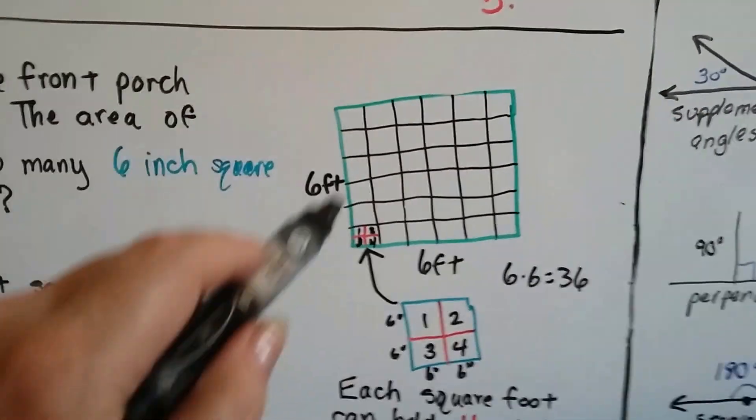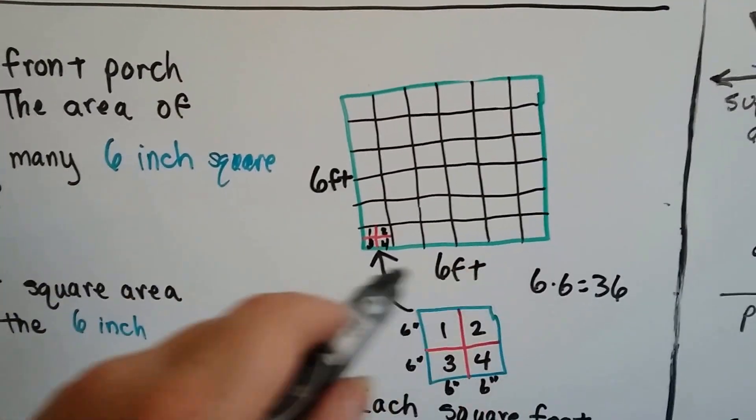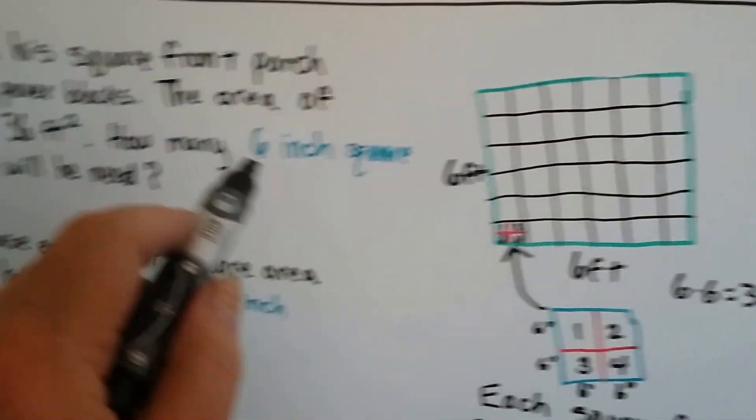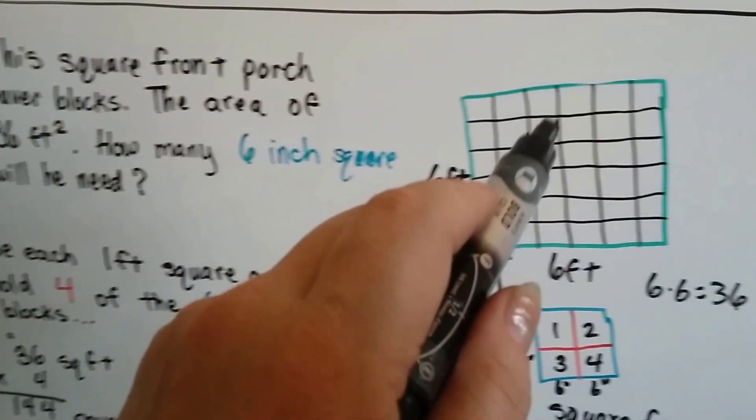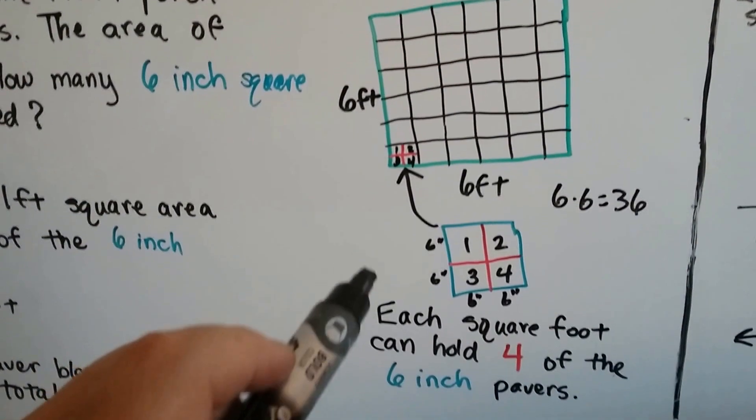So here's his front porch. It's 6 feet one way and 6 feet the other way. And 6 times 6 is the 36 square feet that the porch equals.